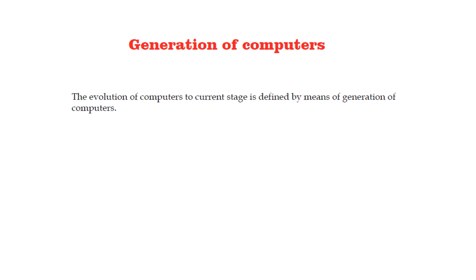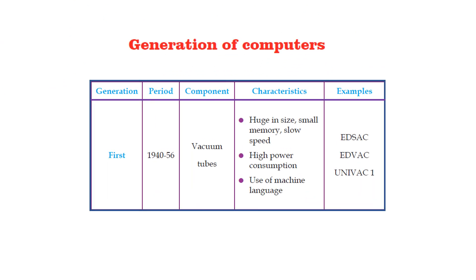Now let's talk about the generation of computers. The evolution of computers to current stage is defined by means of generation of computers. The computers made in the period 1940-56 are said to be the first generation computers. These computers used vacuum tubes. They were huge in size. They had very small memory, and they were very slow as far as speed is concerned. They consumed a lot of power.